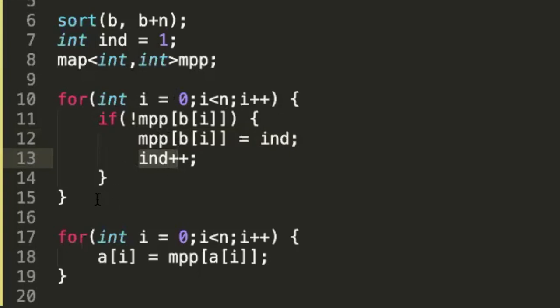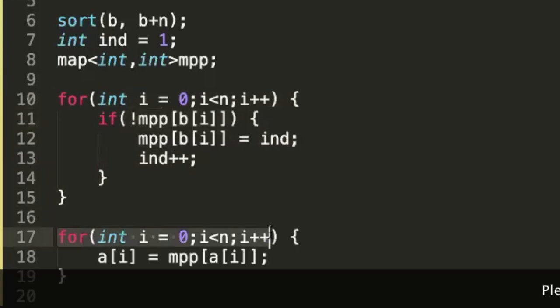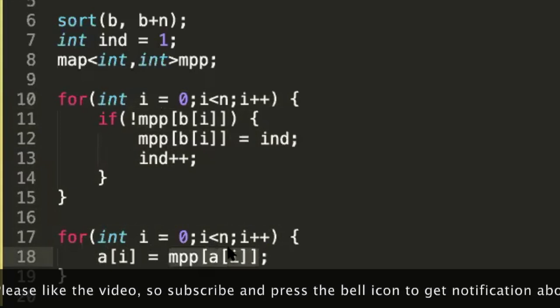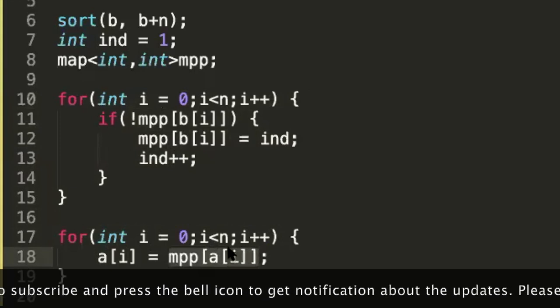So we know in the mapped data structure every number is mapped to a corresponding new number. So once you have done the entire mapping, you come back in the array A and then change array A by its mapped number. And once you have done that, we can easily say we have compressed the number.